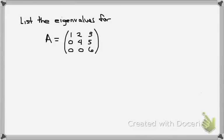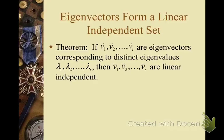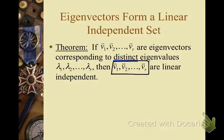For the last question in the reading assignment, list the eigenvalues of the matrix A shown here. Finally, here is an important theorem about linear independence of eigenvectors: if we have eigenvectors V1 through Vr corresponding to distinct eigenvalues lambda 1 through lambda r, then the set of eigenvectors forms a linearly independent set. This will become important later, and we will do the proof together in class.